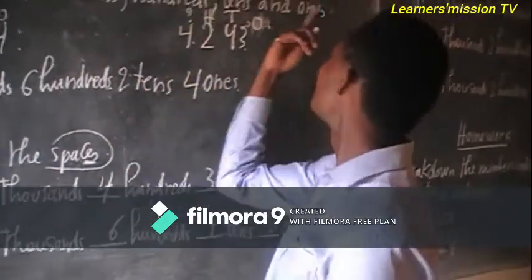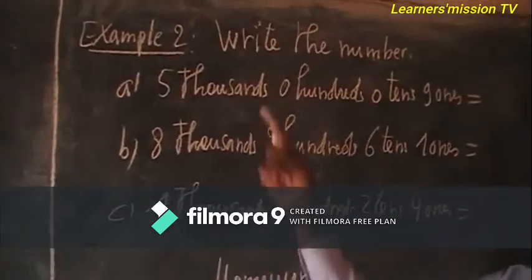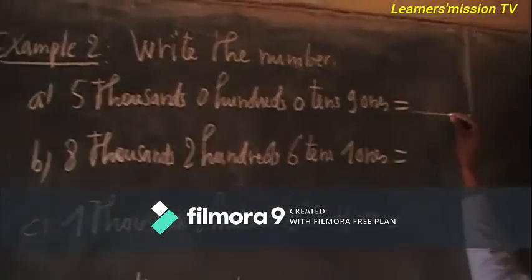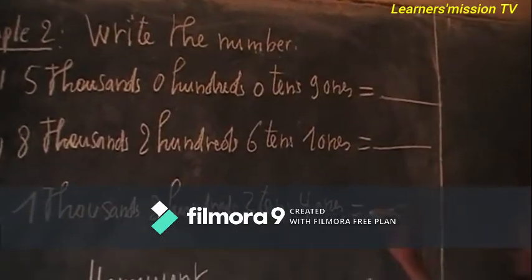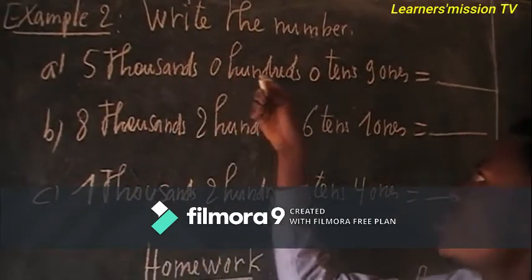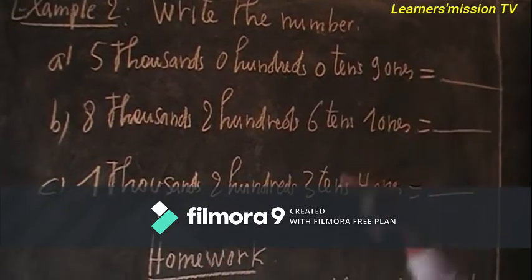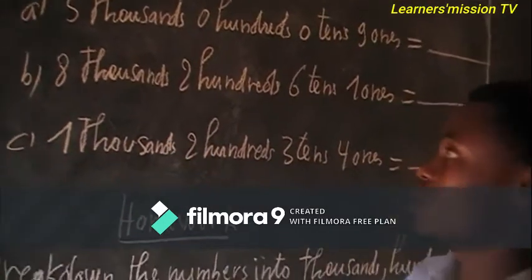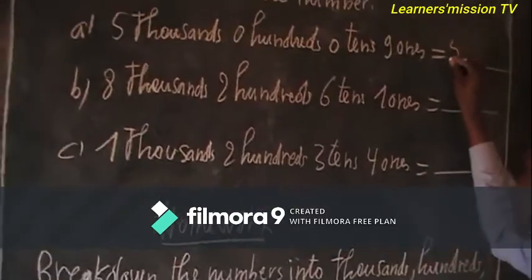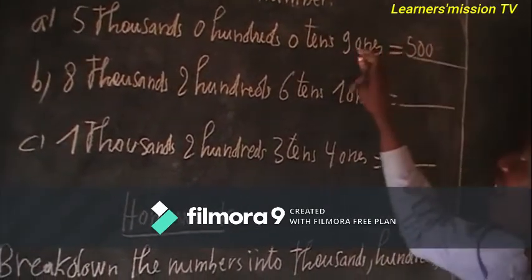Let's move to example two. Write the number. We are going to write the number here. We are having five thousands, zero hundreds, zero tens, and nine ones. So our number is five, zero, zero, nine.